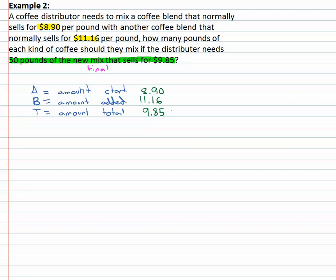Again, that is between the other two numbers. That's a good thing. We're also told that fifty pounds is the total amount we're going to end up with. So we don't need the T, we know that's fifty.